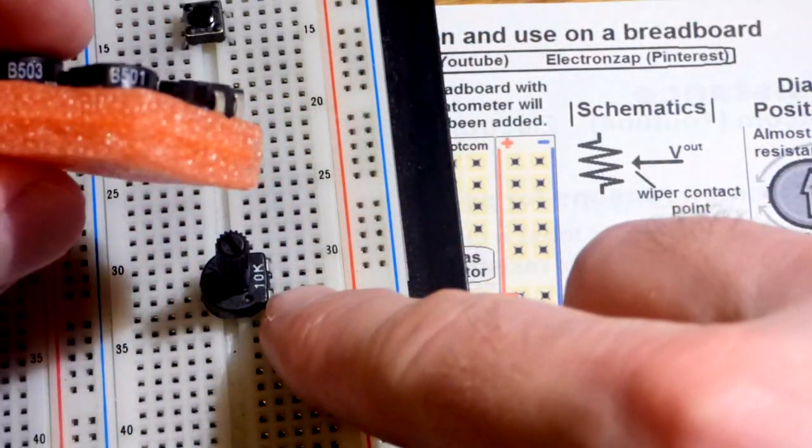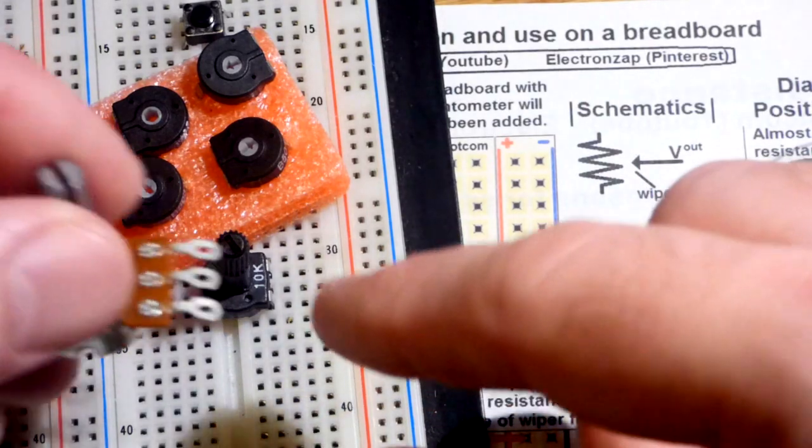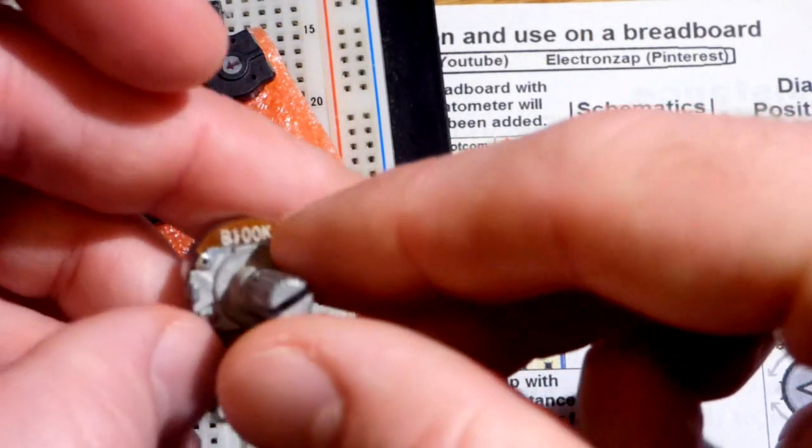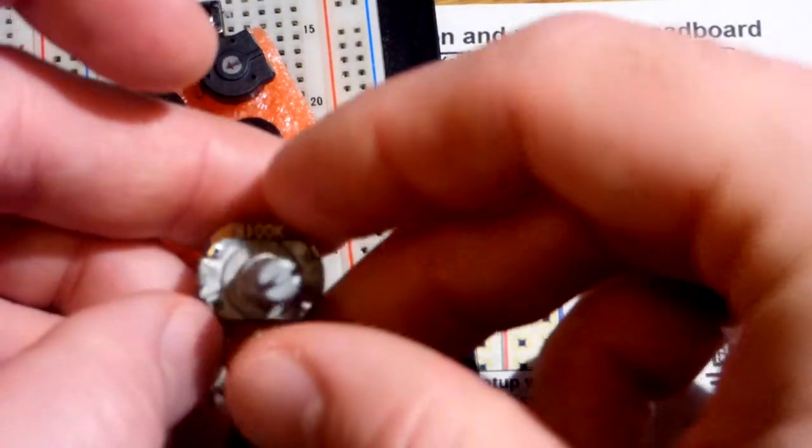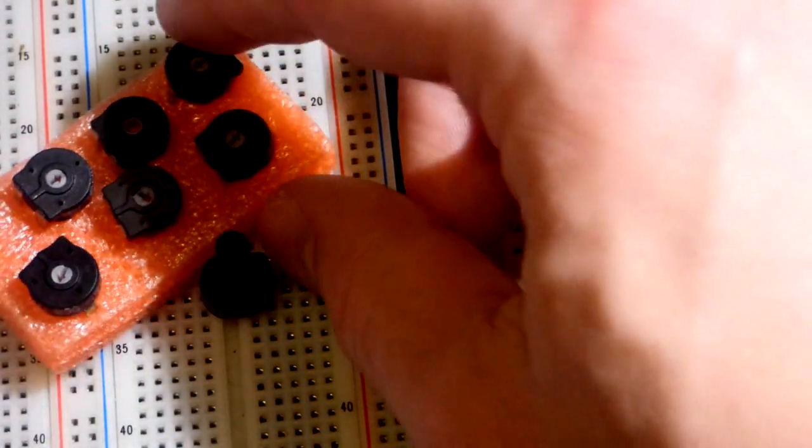And so this has its value on it, 10K. That's 10,000 for 10 kilo ohms. And this one says 100K for 100,000. Now this also has a B at the beginning. All of these have B.